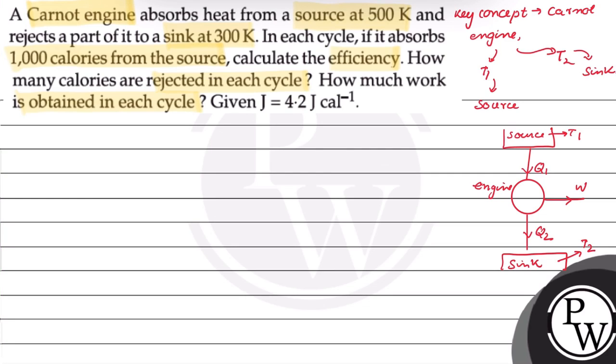From this diagram, we can say that Q1 is equal to W plus Q2. This means Q1 is the amount of heat energy given to the engine or absorbed. W is the amount of work done by the engine and Q2 is the amount of heat energy rejected out. The efficiency of the engine is 1 minus T2 upon T1, and can also be represented as 1 minus Q2 upon Q1.